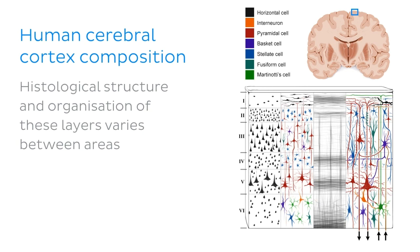The histological structure and organization of these layers varies between areas. In other words, each Brodmann area is characterized by a particular arrangement of these layers and the cells which populate them.